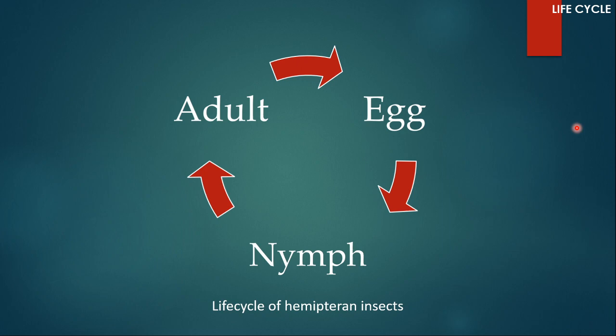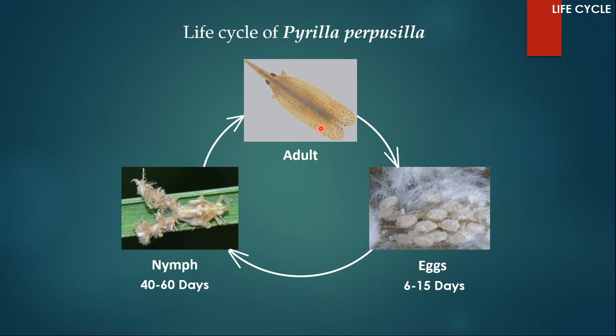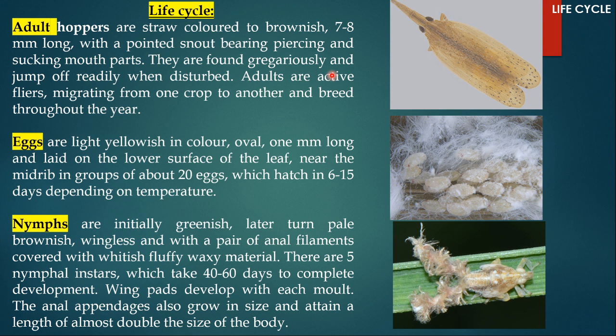Life cycle. Any hemipteran insect's life cycle would include these stages: the adult stage, the eggs, and the nymphal stage. If we apply that to Pyrilla purpusilla's life cycle, we can see the adult, the eggs, and the nymph. The female lays eggs after mating. The eggs hatch in 6 to 15 days. The nymph takes 40 to 60 days to become an adult.